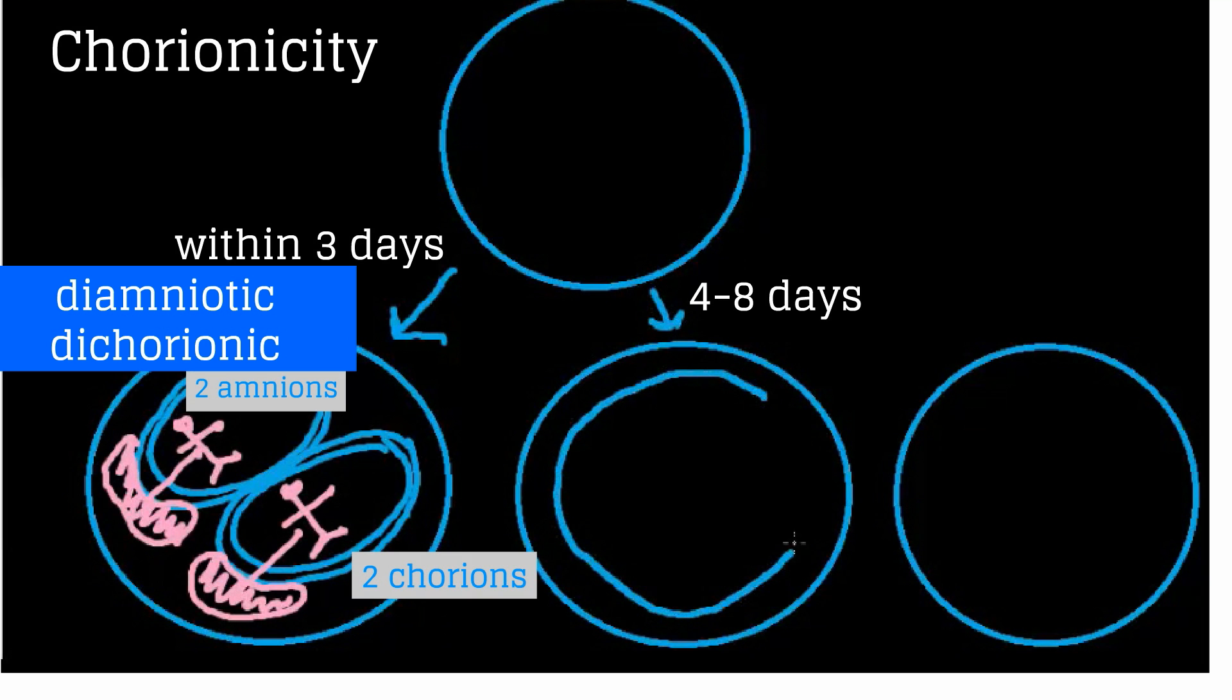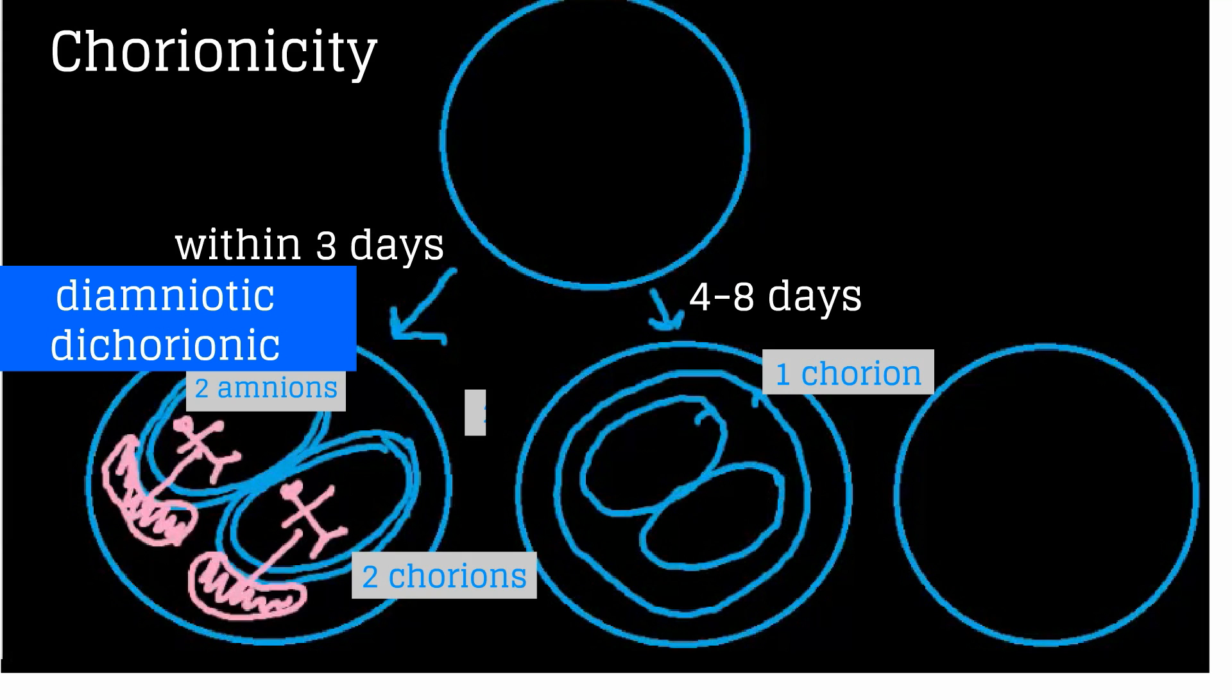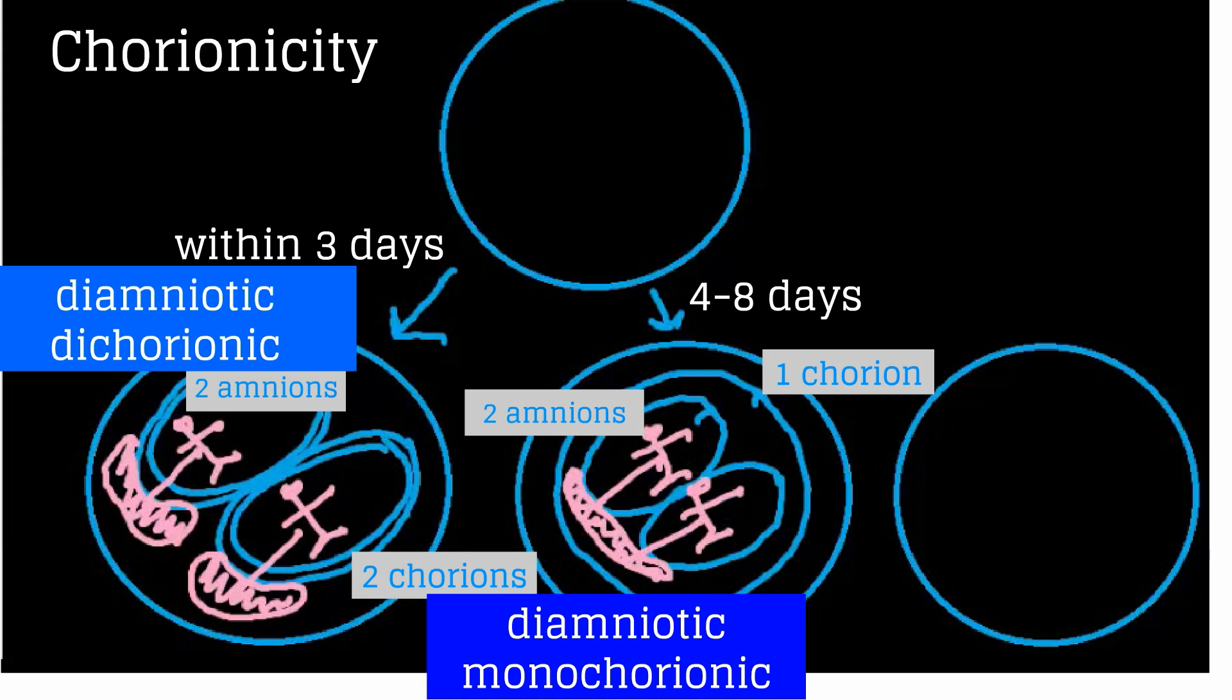If division occurs within days four to eight after fertilization, the chorion is already developed and there will be two amnions, one placenta, and here are the fetuses. These are diamniotic, monochorionic twins.